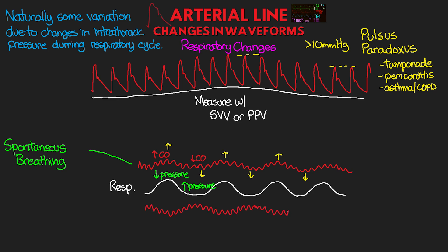The opposite is true when you have your patient on the vent. During inspiration, positive pressure is being pushed into the lungs, thus increasing intrathoracic pressure and reducing the size of the waveform. Then during expiration, intrathoracic pressure drops, leading to an increase in the waveform. You can see the difference when we compare these two waveforms — spontaneous versus ventilated patients. They're essentially doing the same thing, just at opposite points in the respiratory cycle.